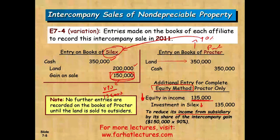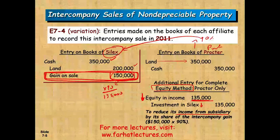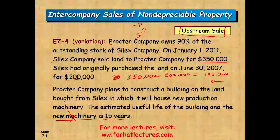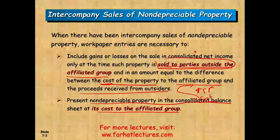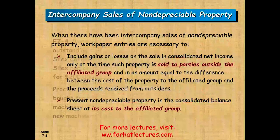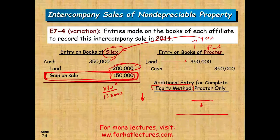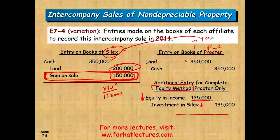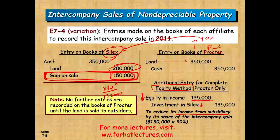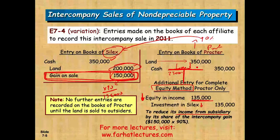At year end, this gain cannot appear on the consolidated financial statement. We said only gains to outsiders count, so the $150,000 gain needs to be removed. The non-depreciable property must be reported at the cost to the affiliated group, which is $200,000 — not $350,000. Therefore, we prepare a journal entry to remove the gain and reduce the land to its original cost: debit gain on sale of land $150,000, credit land $150,000.